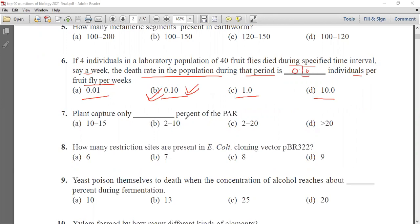Plants capture only dash percent of PAR. Options: 10 to 15, 2 to 10, 2 to 20 and greater than 20. Plants capture 2 to 10 percent of PAR. How many restriction sites are present in E. coli cloning vector PBR 322? 6, 7, 8 or 9. There are 8 cloning sites in vector PBR 322. Yeast poison themselves to death when concentration of alcohol reaches about 13 percent during fermentation.